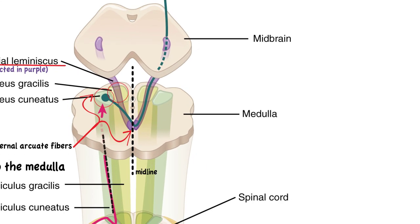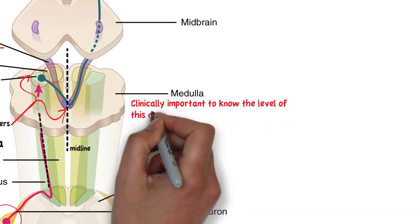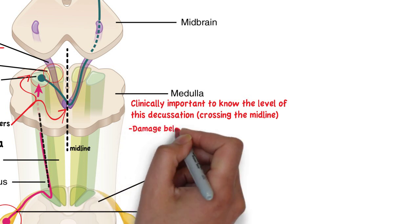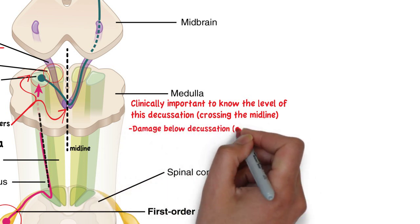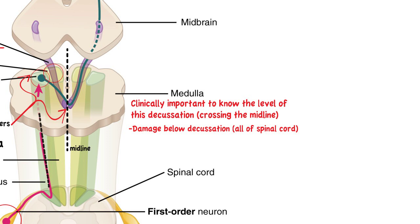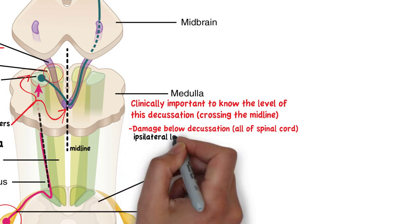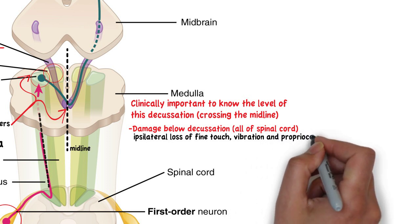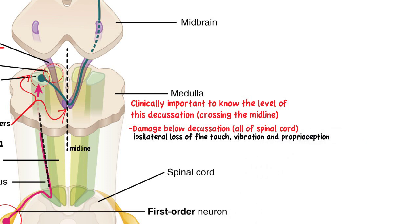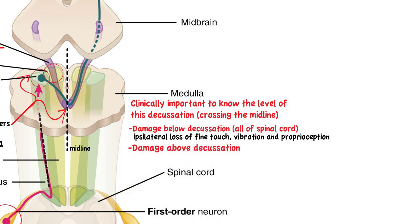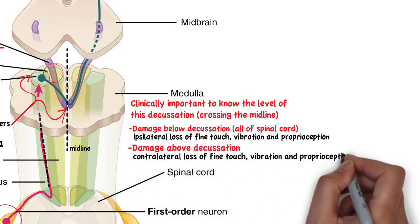Clinically, it is important to know the level of this decussation because damage to the dorsal column medial lemniscus pathway below this level, which includes all of the spinal cord, will produce loss of fine touch, vibration and proprioception sensation on the same side of the lesion — so ipsilateral — whereas lesions above this level will produce contralateral deficits.